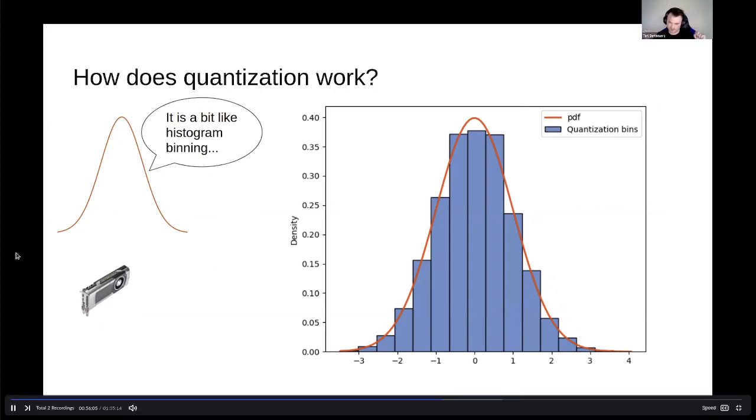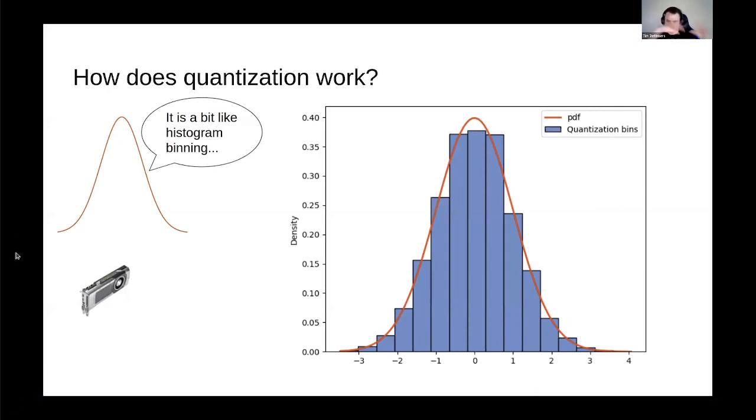His big sister said, it's a little bit like histogram binning. If you have a tensor, it usually represents a normal distribution. And if you have 8-bit quantization, you have 256 different bins. In this example, we have 16 bins, which are equivalent to 4-bit quantization. So what you do is you slice up the normal distribution in bins with equal width. And now all the values that are in the range of a bin get quantized to the middle value of that bin. And so with that, we can reduce the entire distribution just to 16 different values.